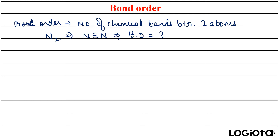In a subjective exam, to calculate bond order you have to first draw the molecular orbital diagram and then calculate bond order from there. Bond order is calculated as half of the number of electrons in bonding molecular orbitals minus the number of electrons in anti-bonding molecular orbitals.